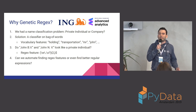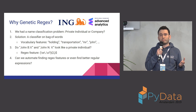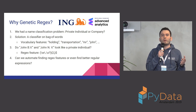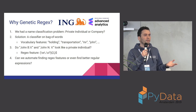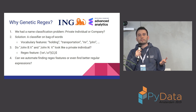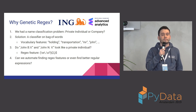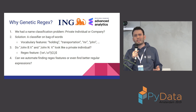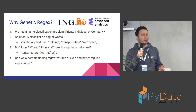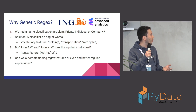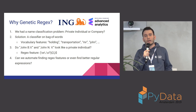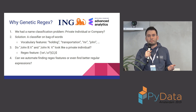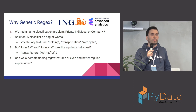We have some very basic features like vocabulary containing words like 'transportation' or 'Mr. John'. In that case, 'John' most probably means it is a private individual. But it doesn't generalize so well, because if you have the example of 'John B.V.' or 'John M.V.', does it look like a private individual? Actually, it is most probably a company.